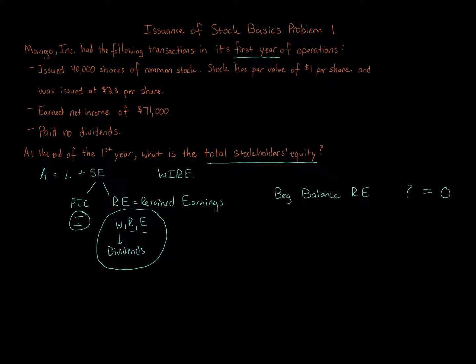We're told they paid no dividends, so dividends are zero. We have net income of $71,000, which means our retained earnings will be a positive $71,000. Dividends reduce retained earnings, revenue increases it, and expenses decrease it. Net income is net revenue; net loss is net expense.